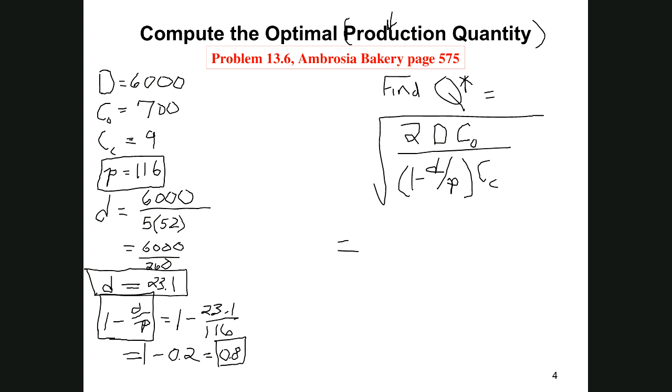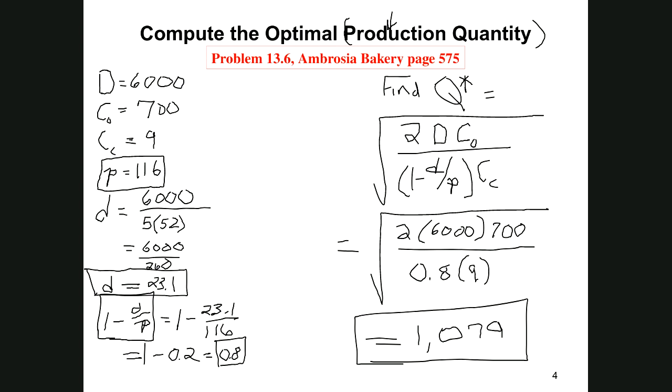This is going to be the square root of 2 times 6,000 times the ordering cost of 700, divided by 0.8 times our carrying cost which is $9. When you do the arithmetic, this comes out to be 1,079 cakes. That's our order quantity, Q star optimal. Not only is it the order quantity, it's the optimal - it leads to the minimum total annual inventory cost.